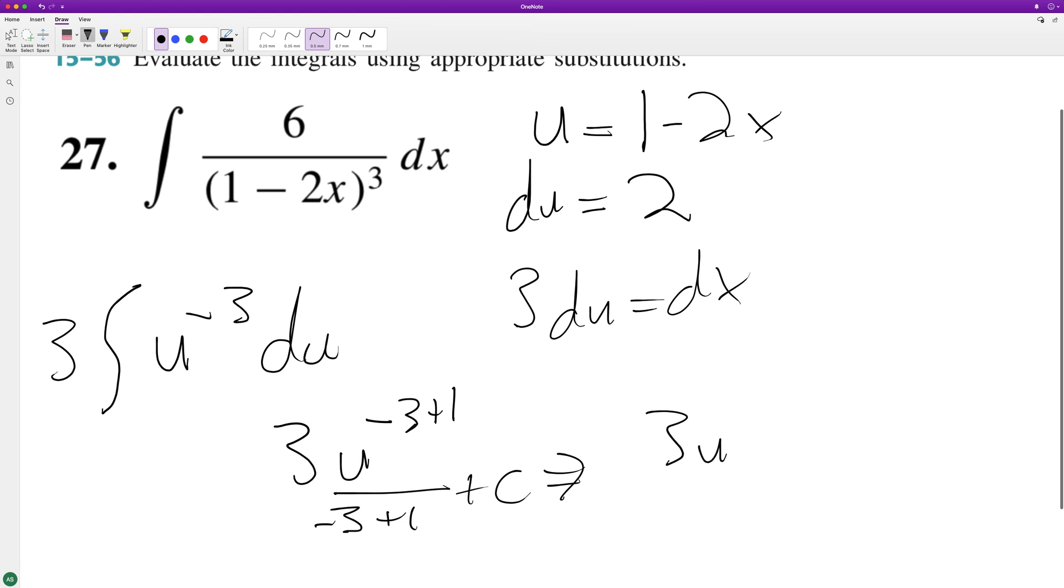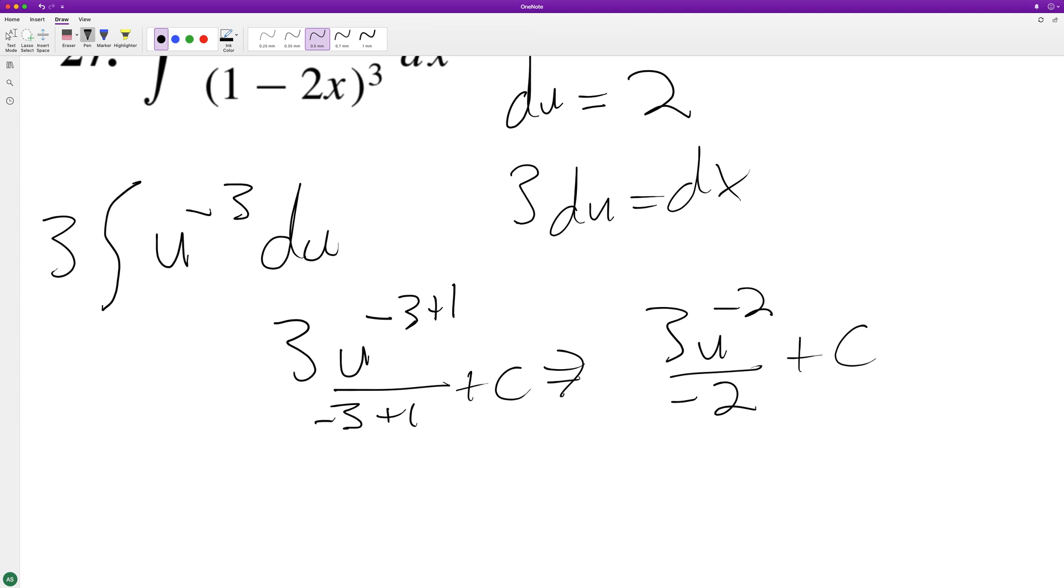We end up with 3 u raised to the negative 2 divided by negative 2 plus c. Then we substitute back in.